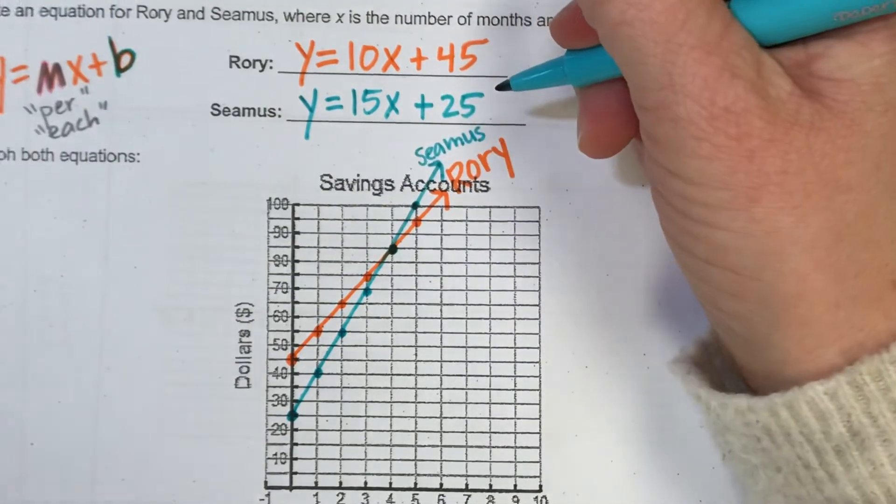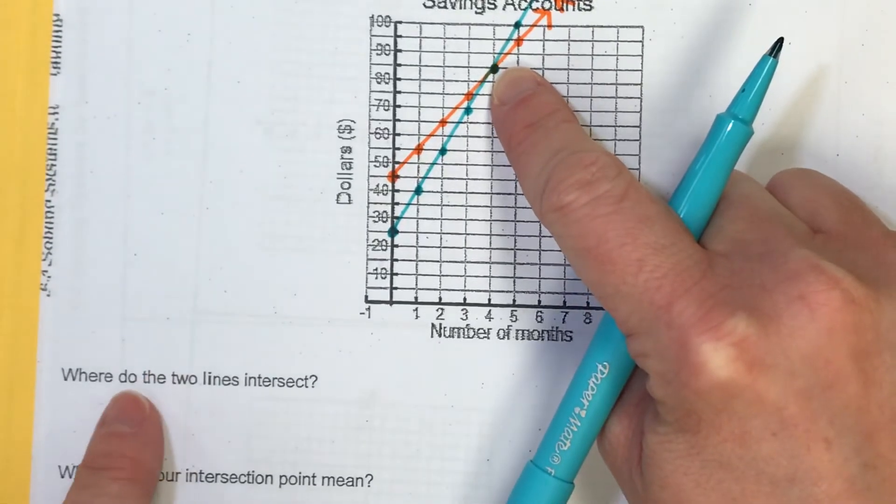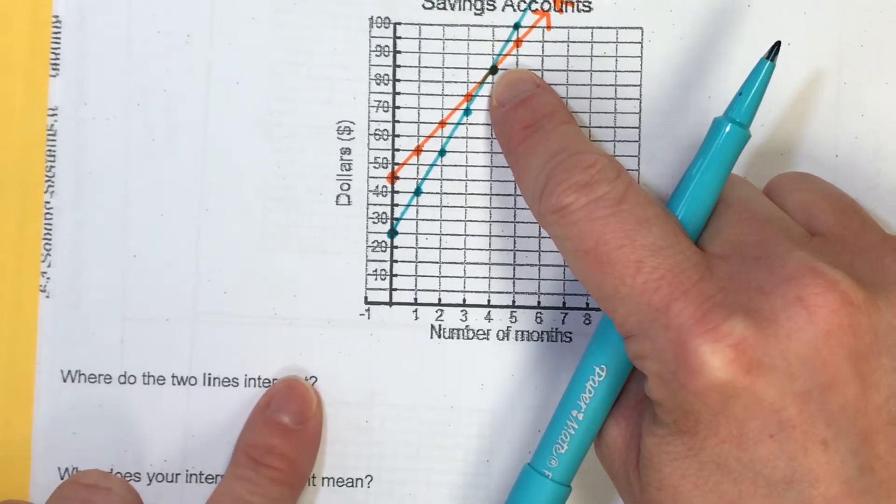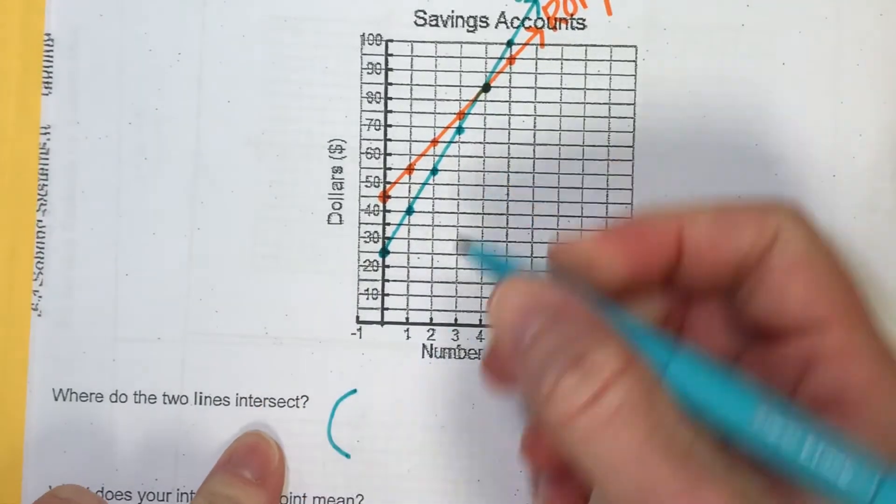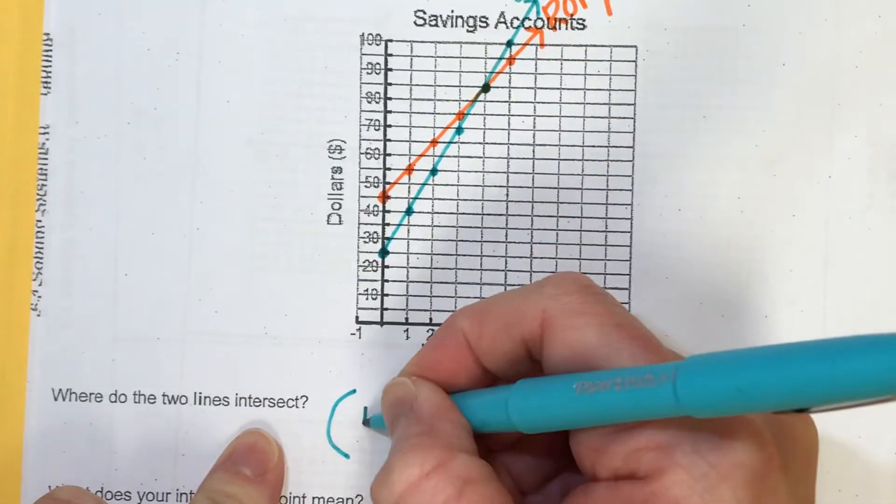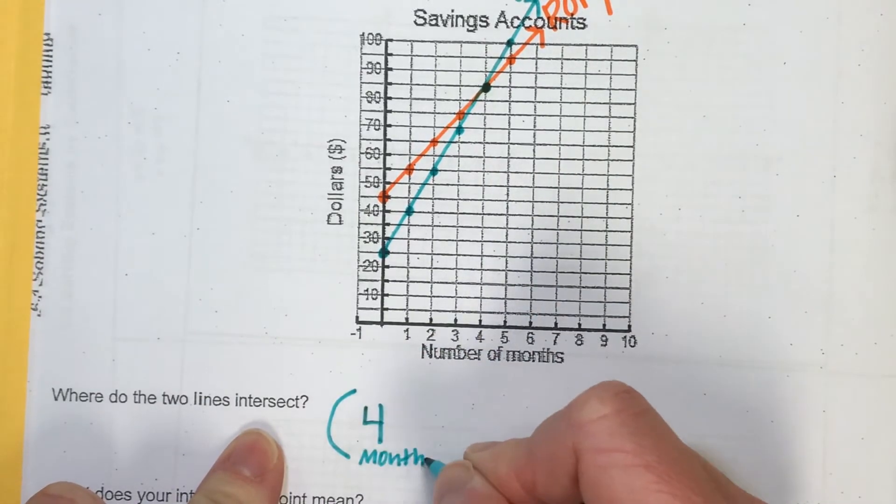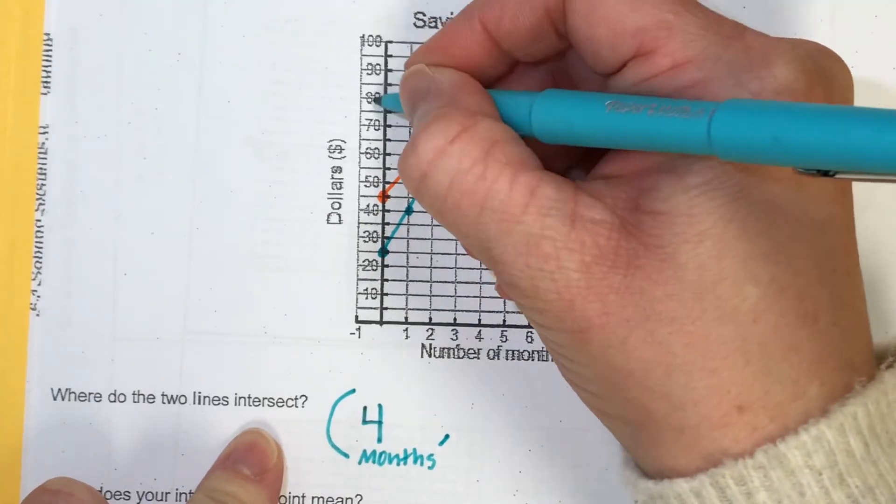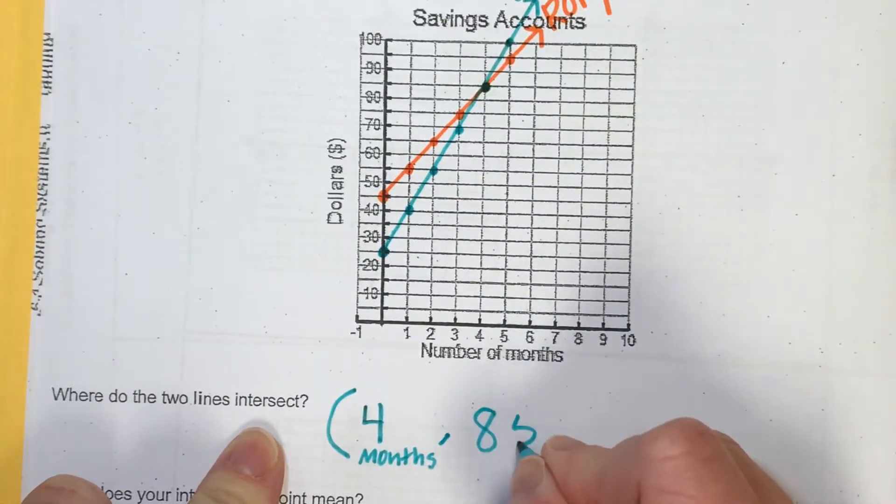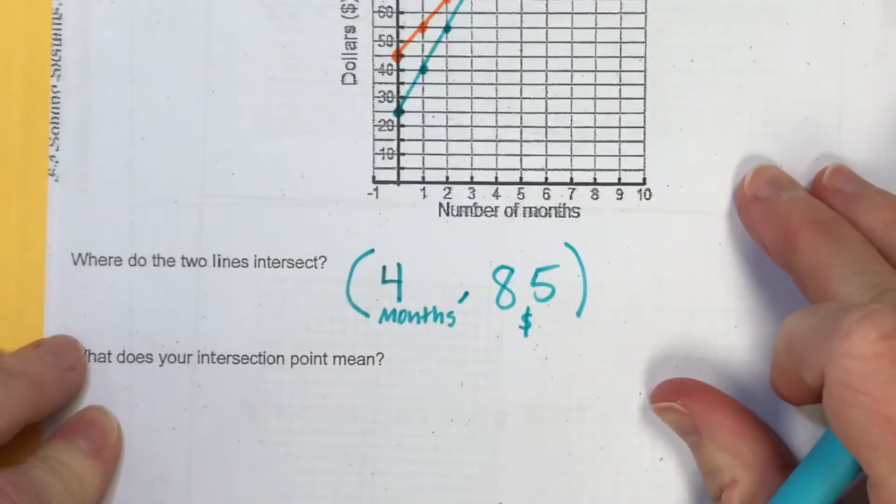I see where the point of intersection is here. So I'm going to kind of zoom down here where the question says, where do the two lines meet? Well, the two lines meet at this point. Let's locate what that number is. The X value is 4, and that was months. And the Y value was in between 80 and 90. So 85. And that was representing dollars.